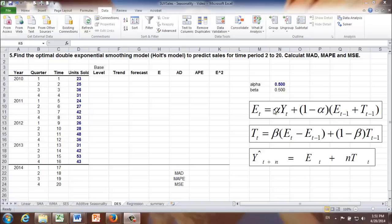For convenience, let's say alpha is 0.5 and beta is also 0.5. Later on, we're going to use solver to find the optimal alpha value and beta value for our model.